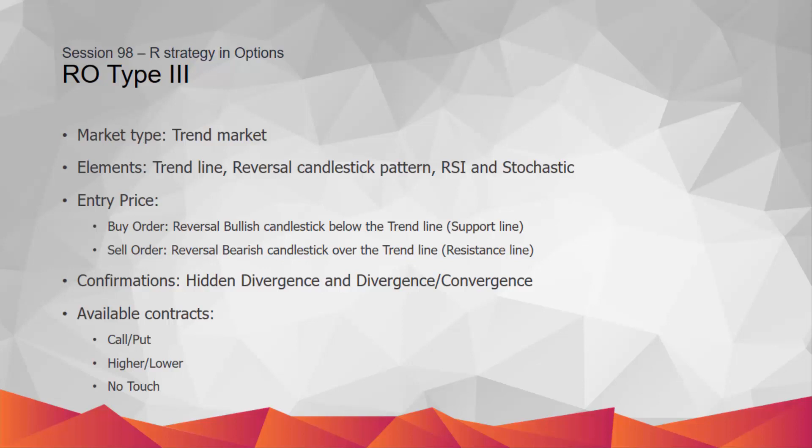Now let's check the specifications of Type 3 strategy. Again, it is suitable only for trend markets and can be applied for all symbols and time frames. The elements are trend line, reversal candlestick pattern, RSI and stochastic. The entry price for buy order is the reversal bullish candlestick pattern below the trend line or support line, and for sell order it is a reversal bearish candlestick pattern over the trend line or resistance line. The confirmations are hidden divergence, divergence and convergence.